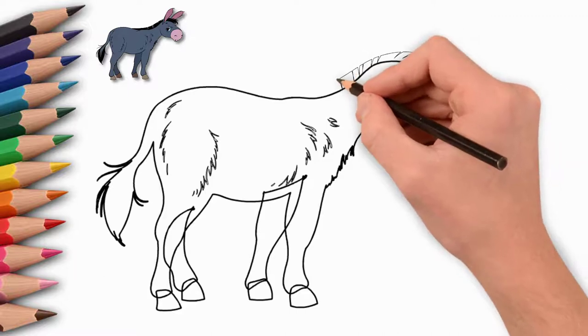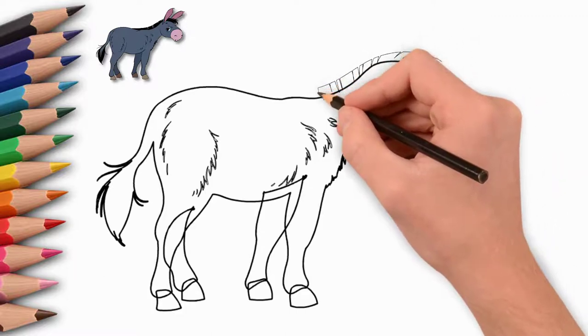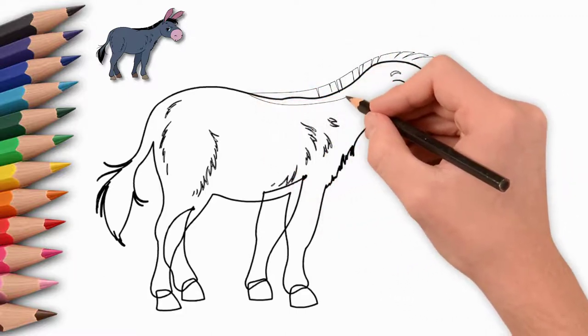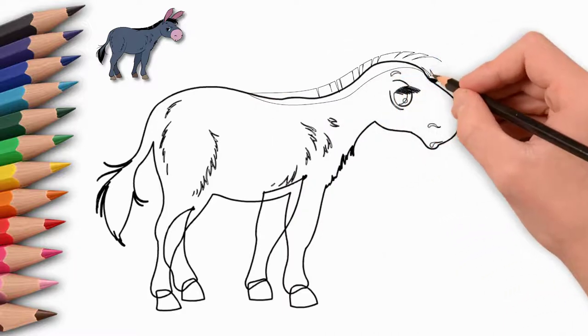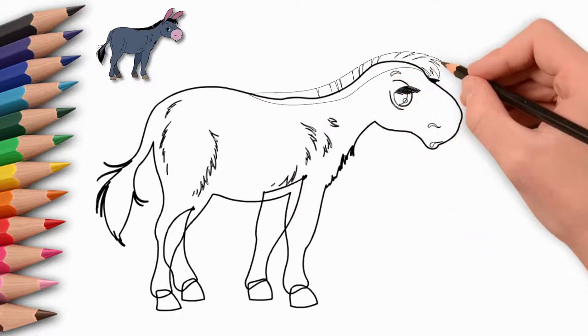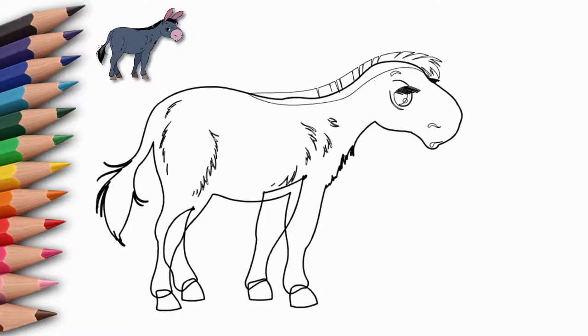And draw two big ears. The donkey's ears are large and raised to the mountain. Draw two ears. Carefully draw the details. One ear is closer to us and it is visible intact.